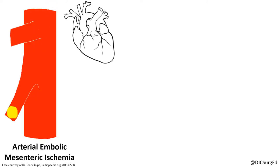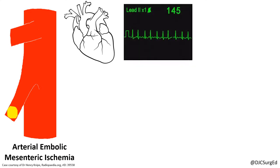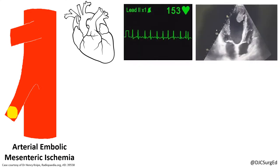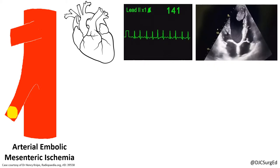The first subtype is arterioembolic mesenteric ischemia, most commonly arising from a cardiac source. Potential proximal causes include atrial tachyarrhythmias, valvular lesions, or proximal aneurysms.